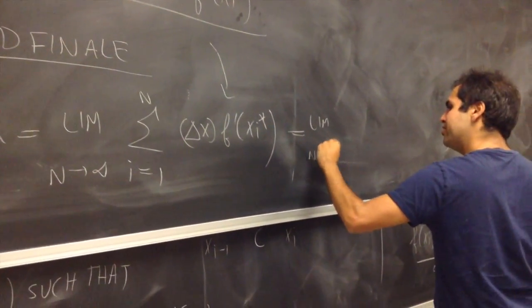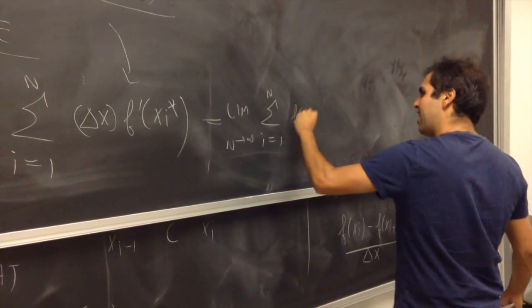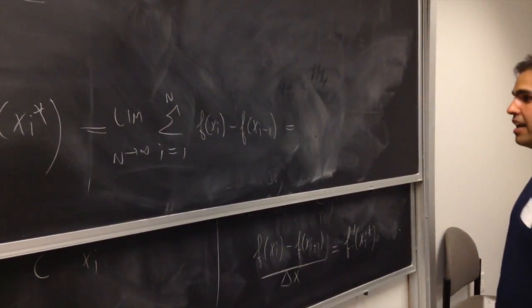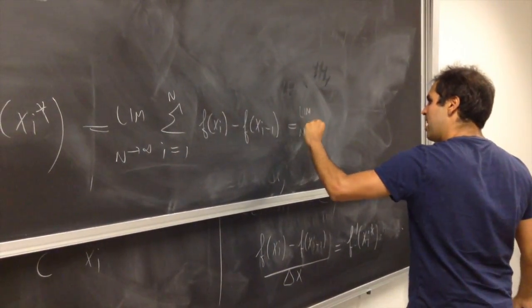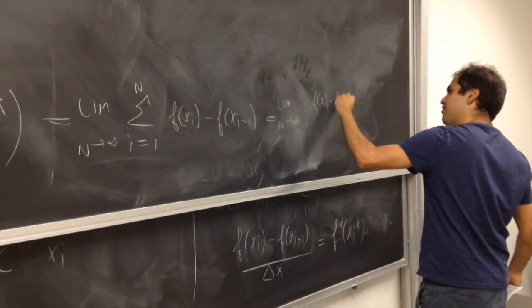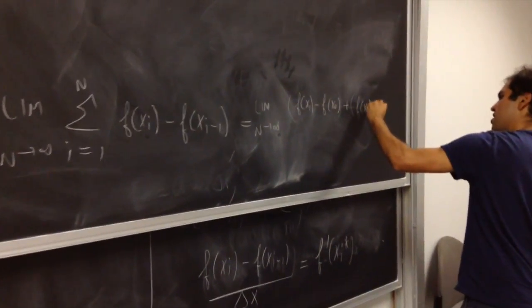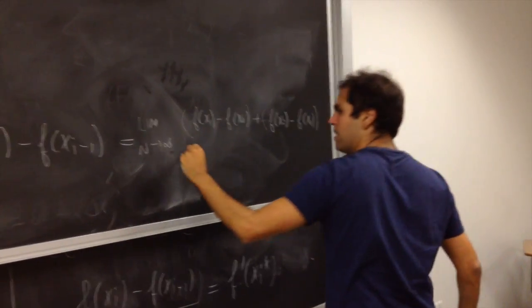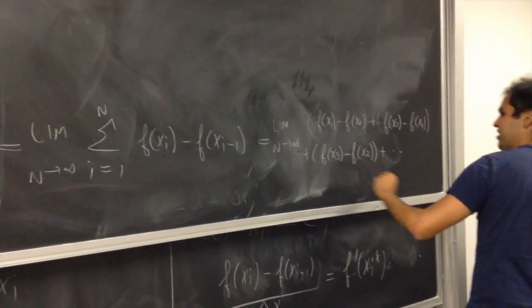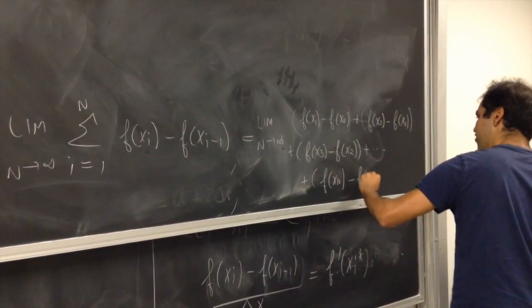That's equal to limit n goes to infinity, i from 1 to n of f of xi minus f of xi minus 1. Well, let's just calculate what this sum is. So, it's limit n goes to infinity of. So, if i is 1, that's f of x1 minus f of x0 plus the next sum is f of x2 minus f of x1 plus f of x3 minus f of x2 plus etc. And you go all the way to f of xn minus f of xn minus 1.